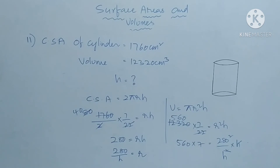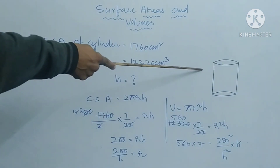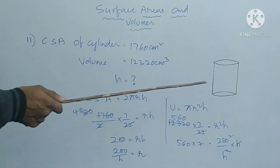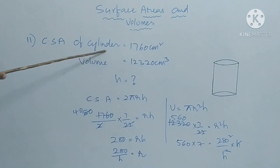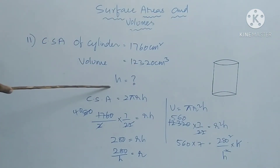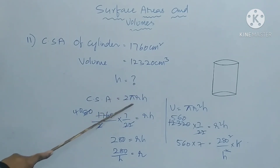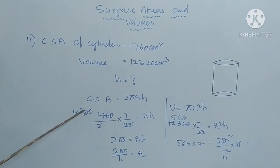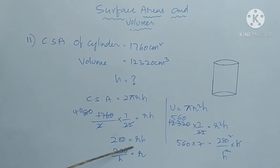This is our eleventh question from Exercise 10.2. The curved surface area of a cylinder is 1760 centimeter square and its volume is 12,320 centimeter cube. Find its height. Curved surface area equals 2πrh, so 1760 equals 2πrh. Transposing: rh equals 1760 by 2 into 7 by 22, which gives 40 into 7 equals 280. So rh = 280, meaning r equals 280 by h — this is equation 1.